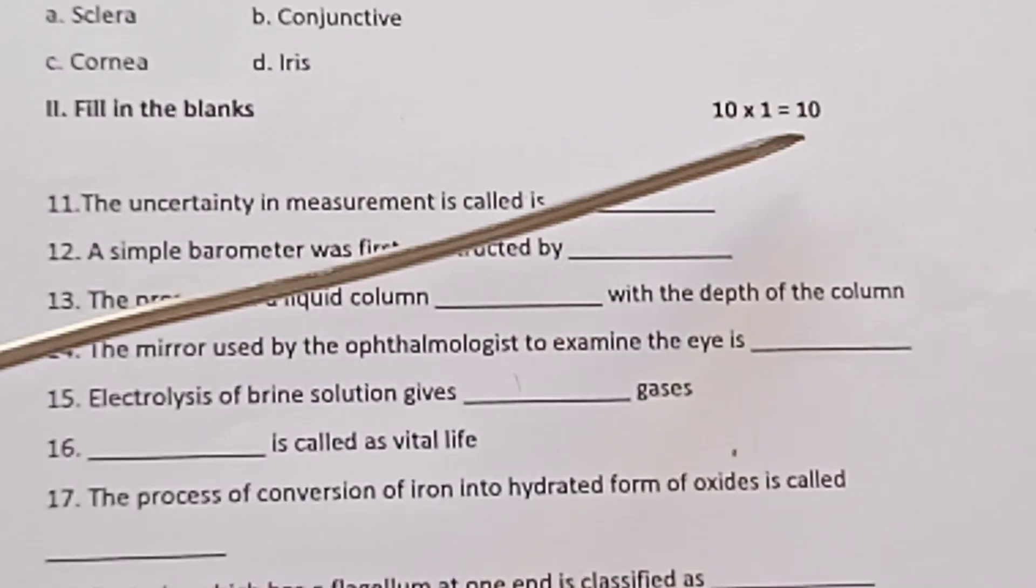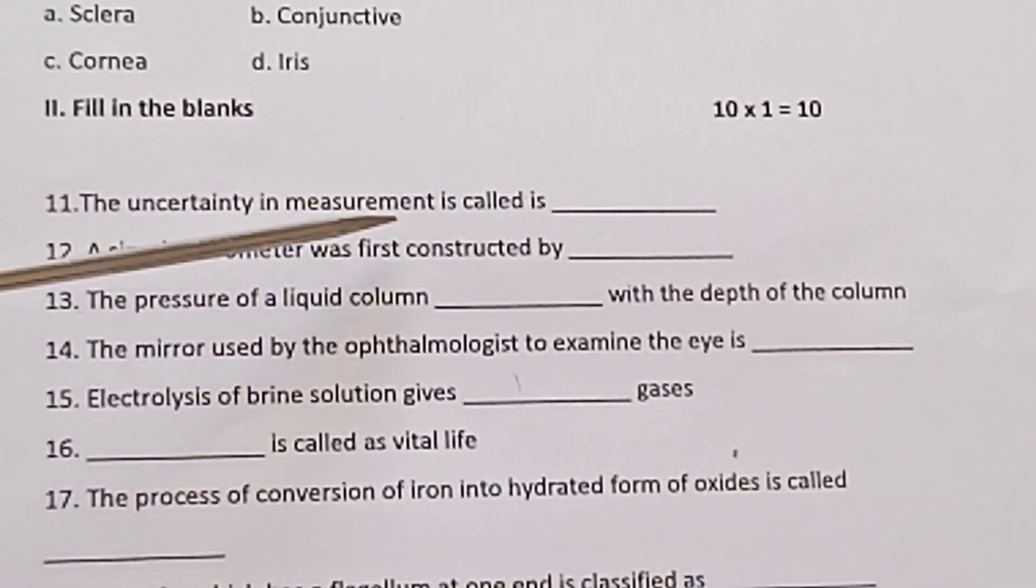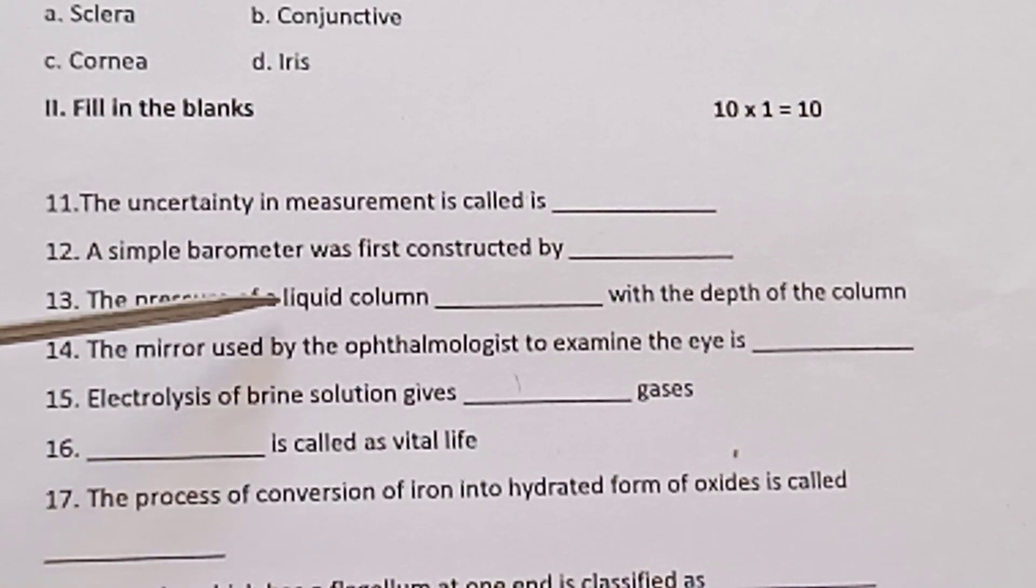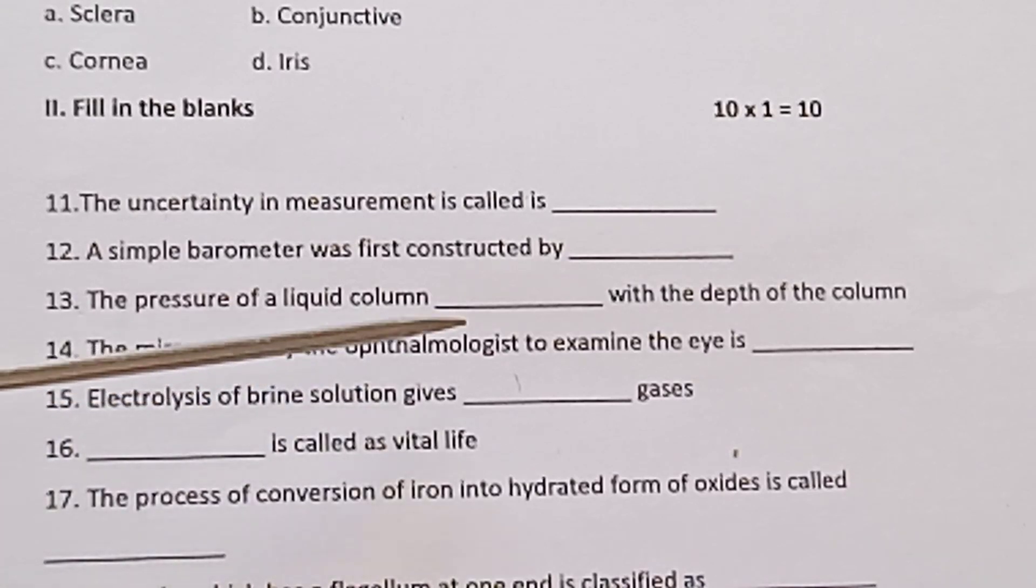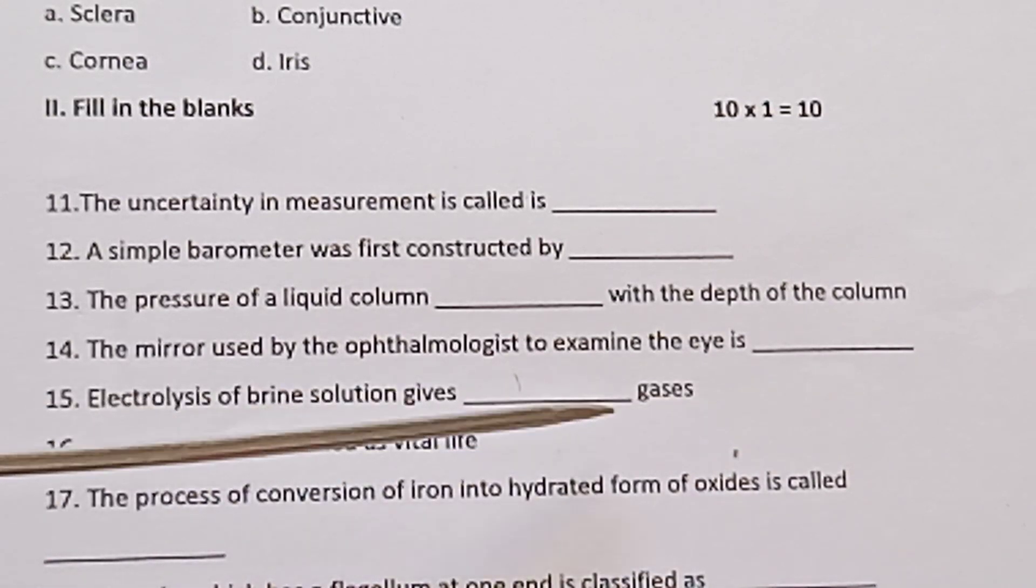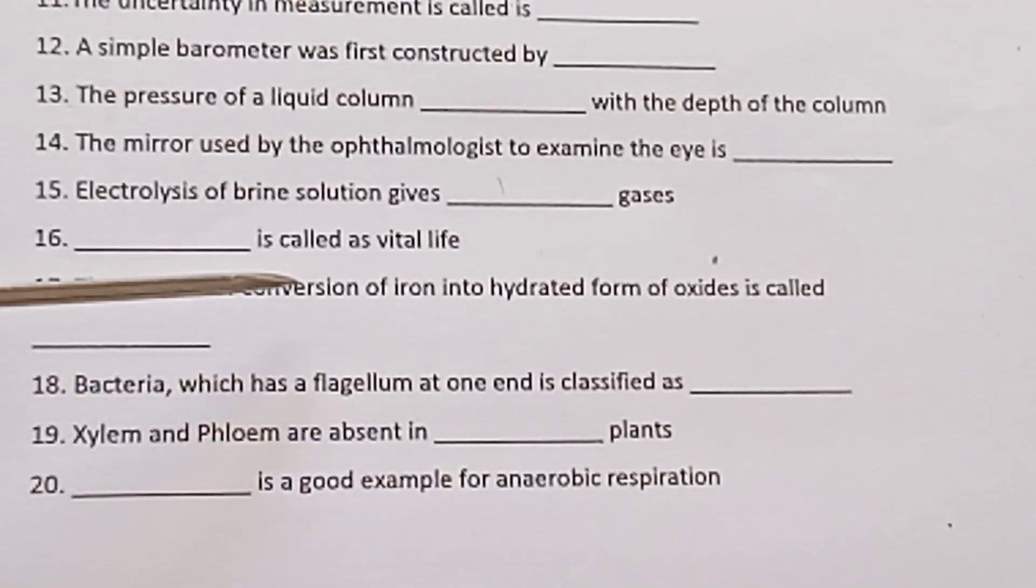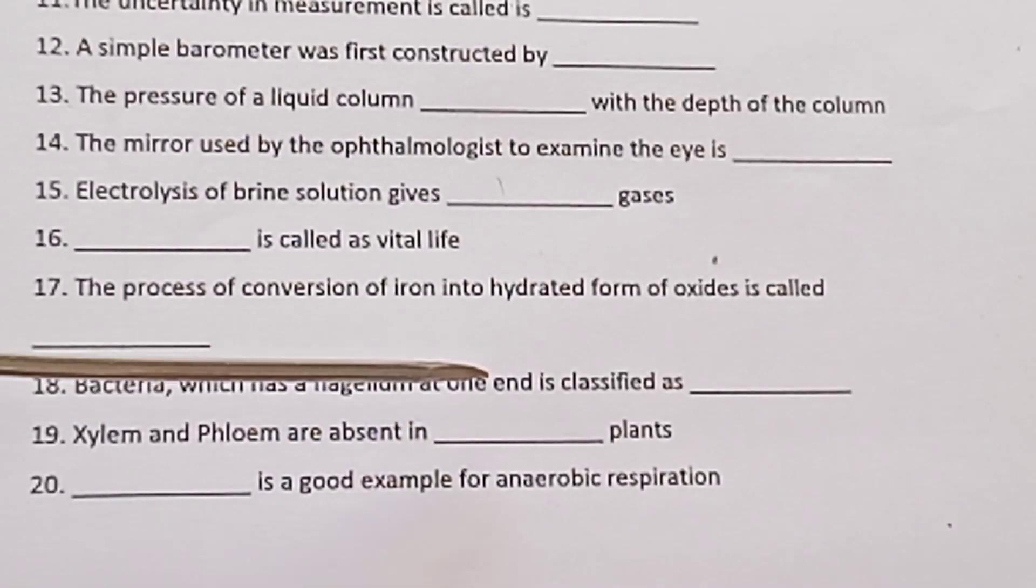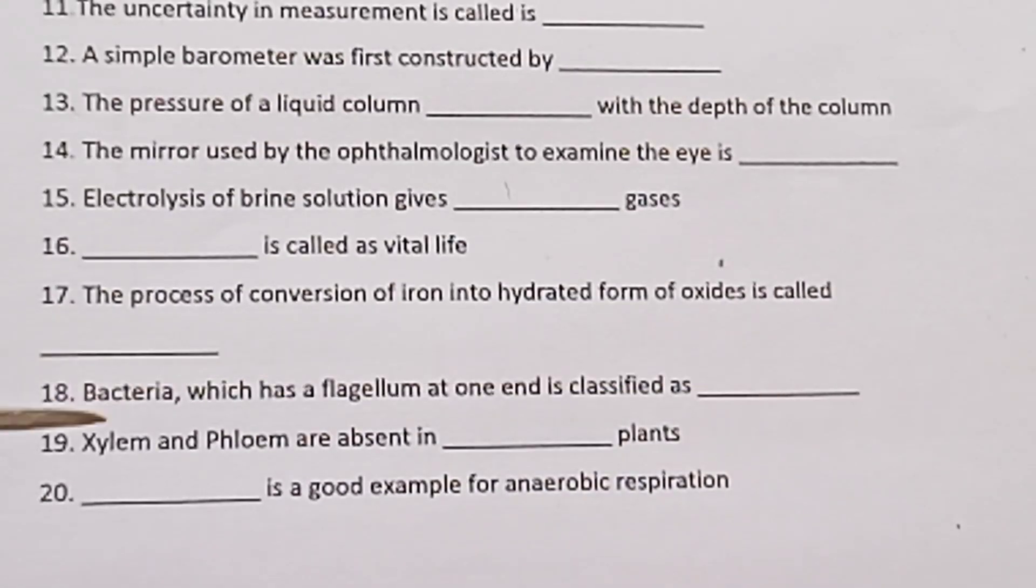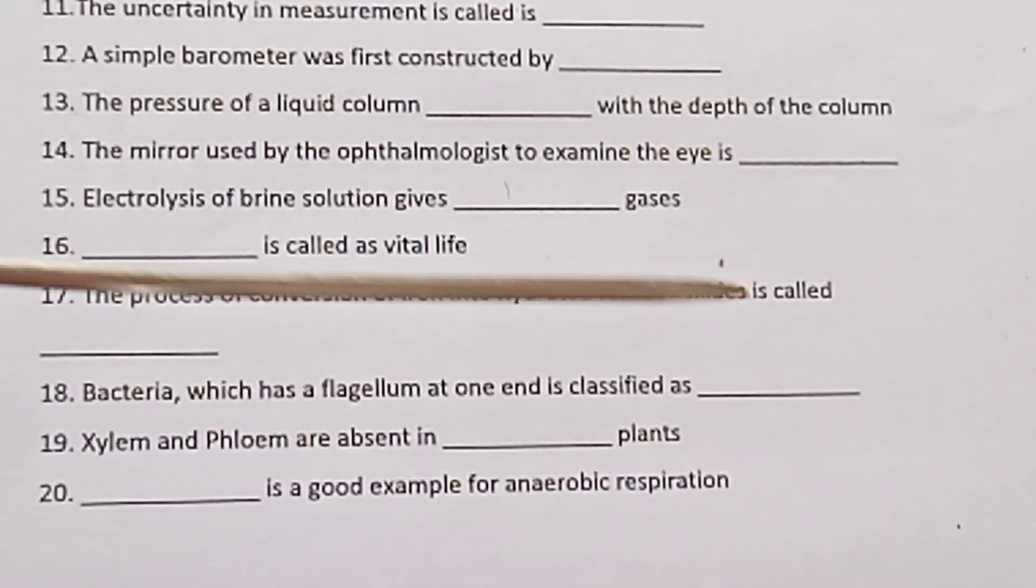Roman numeral 2, fill in the blanks, 10 into 1 is equal to 10. The uncertainty in measurement is called dash. A simple barometer was first constructed by dash. Thirteen, the pressure of a liquid column dash with the depth of the column. Fourteen, the mirror used by the ophthalmologist to examine the eye is dash. Fifteen, the electrolysis of brine solution gives dash gases. Sixteen, dash is called as vital life. Seventeen, the process of conversion of iron into hydrated form of oxide is called dash. Bacteria which has a flagellum at one end is called as dash. Nineteen, xylem and phloem are absent in dash plants. Twenty, dash is a good example for anaerobic respiration.